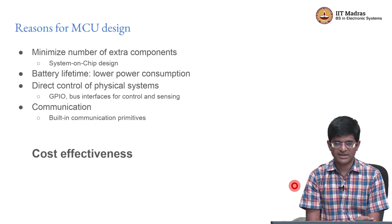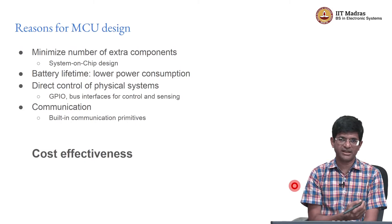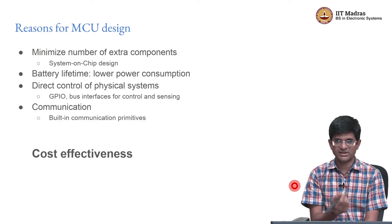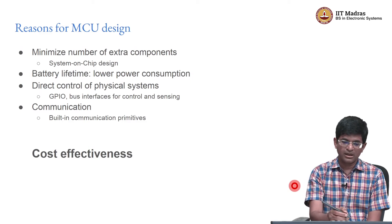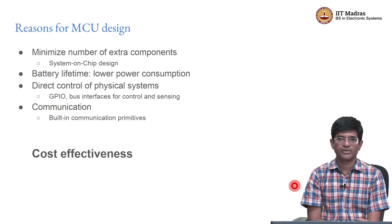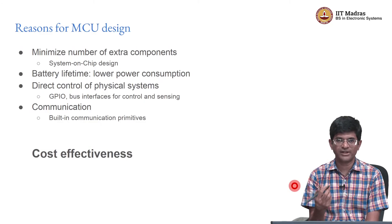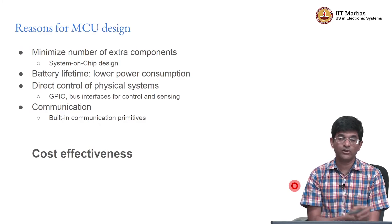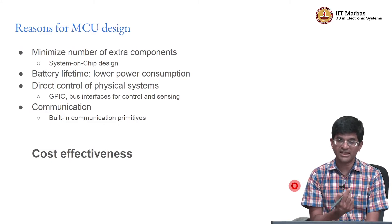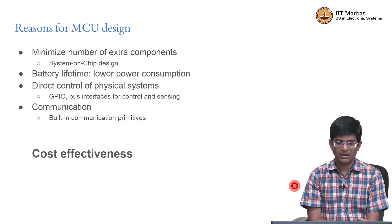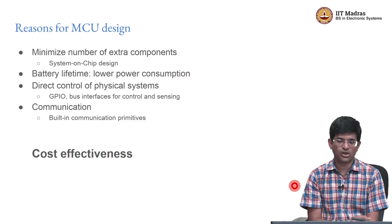Why do we go about doing this integration and trying to create systems on chip? There are actually very specific reasons. When you are building a large system, the number of different discrete components adds to what is called the bill of materials — these are different components that you need to keep in stock in inventory. If you can replace 10 different chips with a single chip that has the functionality of all of those, you are minimizing the number of extra components, which makes your inventory control a lot easier. This has a very serious impact on the economics of design, and it does matter when you are building large and complicated systems.